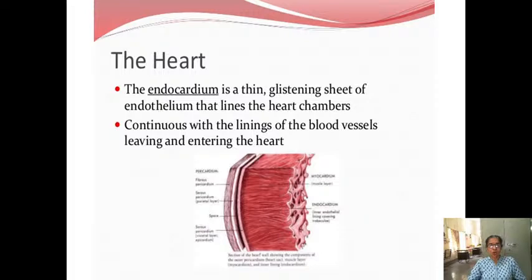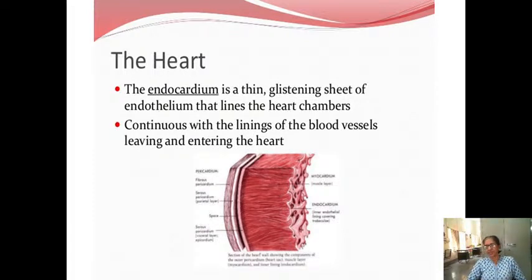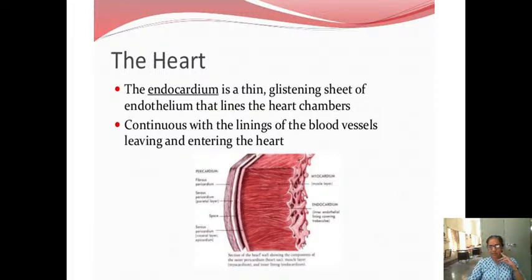The inner layer of the heart is called the endocardium. It is a thin glistening sheet of endothelium that lines the heart chambers. Even the blood vessels are also lined by this layer — it is continuous with the linings of the blood vessels leaving and entering the heart. So it is the innermost layer of the heart, and it continues with the layers of the blood vessels.